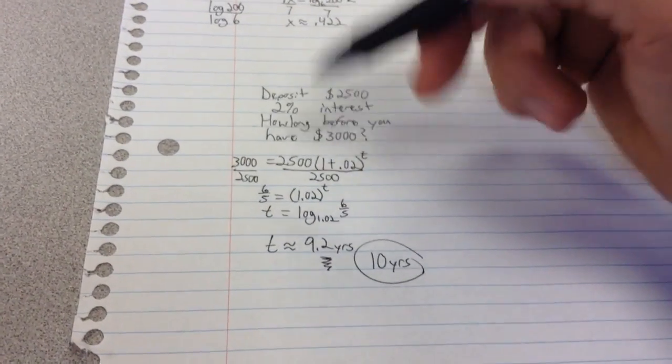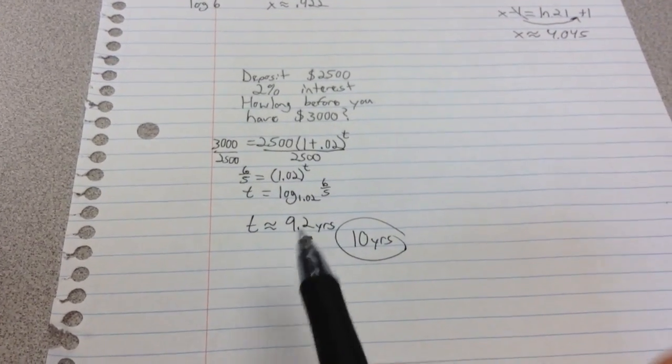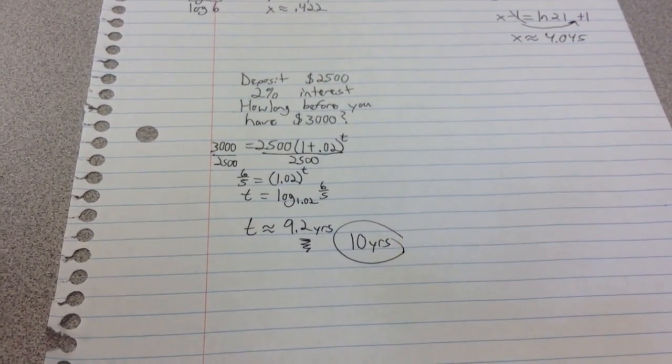If you were adding your interest more than once a year like we talked about, this right here could change. You could actually have partial years if you were adding the interest more than once a year.